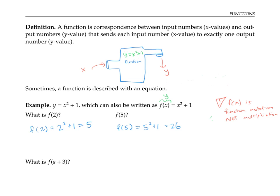Sometimes it's useful to evaluate a function on a more complicated expression involving other variables. Remember, the function's value on any expression is what you get when you plug in that whole expression for x. So f of a plus three is going to be the quantity (a plus three) squared plus one, which we can rewrite as a squared plus six a plus nine plus one, or a squared plus six a plus ten.